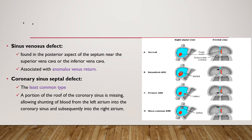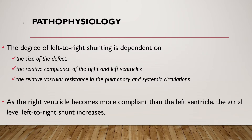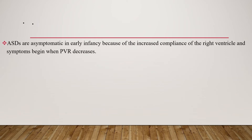When we see pathophysiology, in atrial septal defect the degree of left-to-right shunt is dependent on three factors: the size of the defect, the relative compliance of the right and left ventricles, and the relative vascular resistance in the pulmonary and systemic circulation. As the right ventricle becomes more compliant than the left ventricle, the atrial level left-to-right shunt increases.